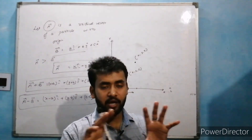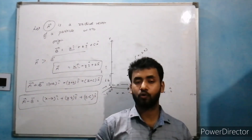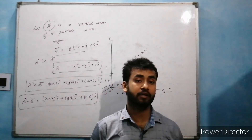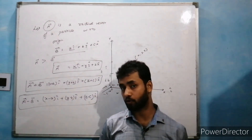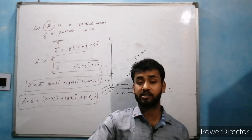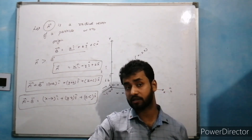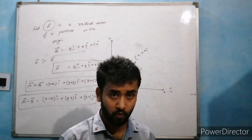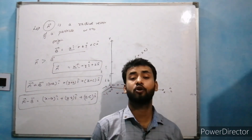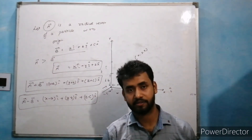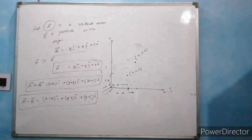अभी आप एक दो बार इस video को देखेंगे और समझने की कोशिश कीजिएगा। Next video में मैं आपको बताऊंगा कि vector के अंदर दो तरह के products होते हैं — एक को scalar product बोलते हैं जिसे dot product कहा जाता है, और एक को vector product बोलते हैं जिसे cross product बोलते हैं। Thank you and have a best day।